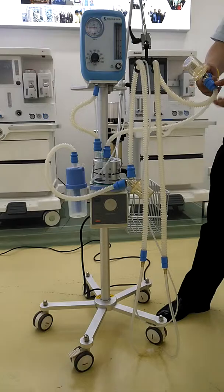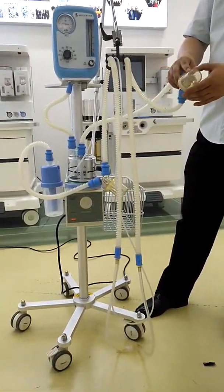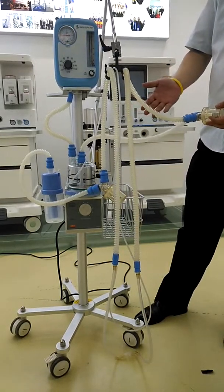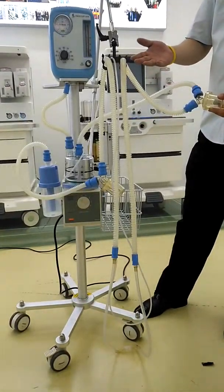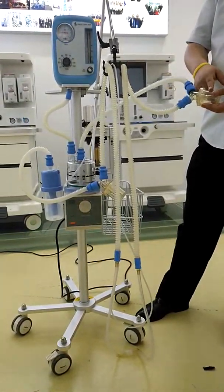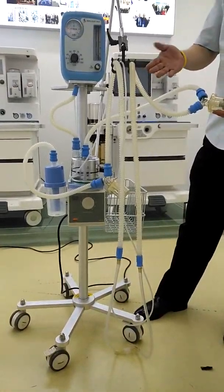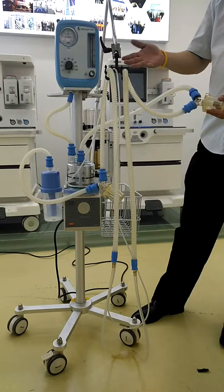Between the two pipes we're using a water trap for collecting water inside. The humidifier generates heat and wets the gas, so there will be some water inside the water trap. This prevents the water from getting into the baby's mouth or nose.